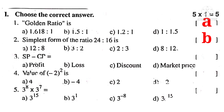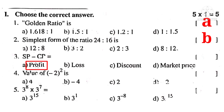Number 3: SP minus CP. SP means selling price, CP means cost price. When selling price is more than cost price, we get profit. So the correct choice is A.